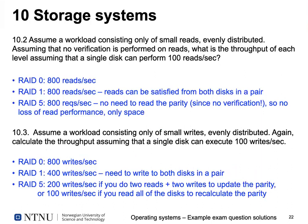For performance: if all disks can perform 100 reads per second and all can be accessed in parallel, then for RAID 0 you get 800 reads per second since no single disk is a bottleneck. For RAID 1 you also get 800 reads per second — not 400 — because you can read one block from the original disk and another from the mirror disk simultaneously. For RAID 5, if we do not verify on reads, you can also use all disk bandwidth for 800 read requests per second, since you don't check parity on reads.